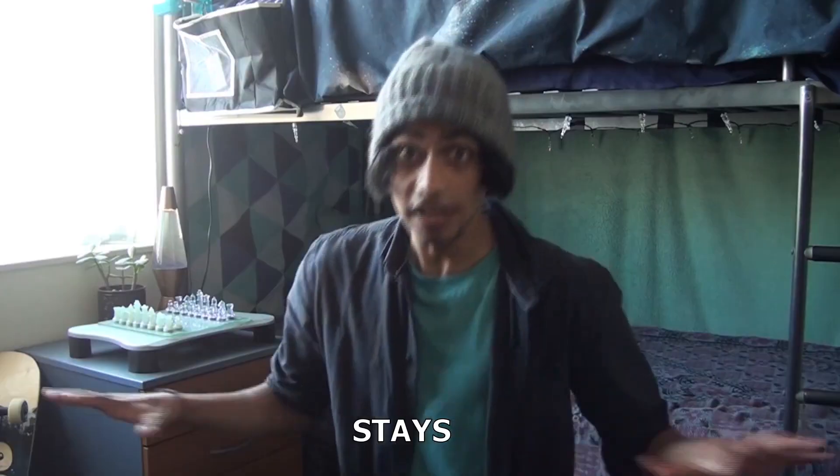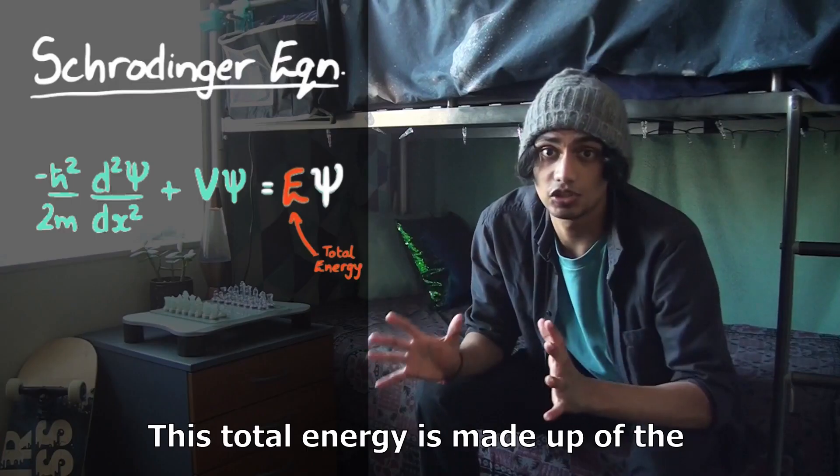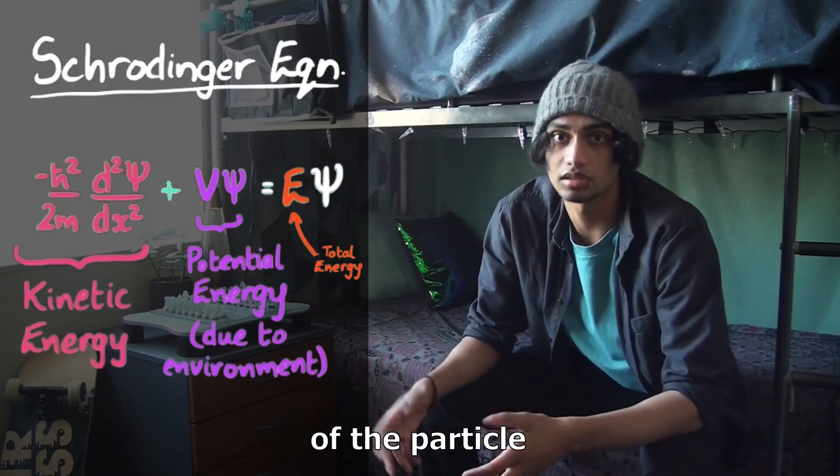Total energy stays the same, assuming there are no external influences on the system. This total energy is made of the kinetic energy and potential energy of the particle.